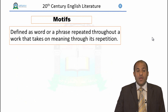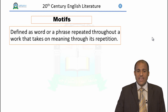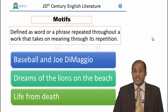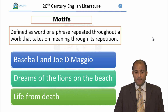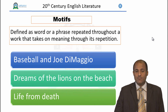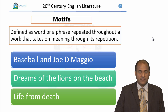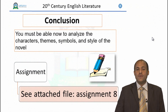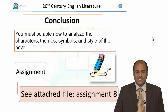Finally, motives — defined as a word or phrase repeated throughout a work that takes on meaning through its repetition. In the novel, baseball and DiMaggio recur again and again. The dreams of the lions on the beach occur three times. And the motif of life coming from death is repeated at many levels throughout the story. You must now be able to analyze the characters, the themes, the symbols, and the style of the novel.